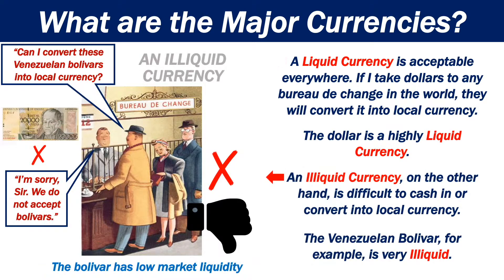An illiquid currency, on the other hand, is difficult to cash in into a different local currency. The Venezuelan Bolivar, for example, is very illiquid.